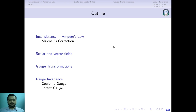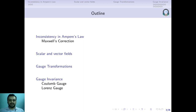This is the plan of this particular lecture. We shall first begin by exploring an inconsistency in Ampere's law, followed by the correction made by Maxwell — that's why we call it the Ampere-Maxwell's law. Then we will introduce the notion of scalar and vector fields. You are already familiar with the scalar electric potential and the vector potential. We will introduce these two potentials and reduce Maxwell's equations to two inhomogeneous equations in these scalar and vector potential fields. Then we will simplify these inhomogeneous equations using a special kind of transformation known as a gauge transformation. Finally, we will look at two specific gauge transformations: the Coulomb gauge and the Lorentz gauge.